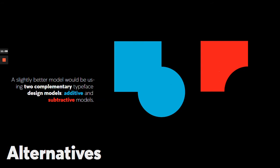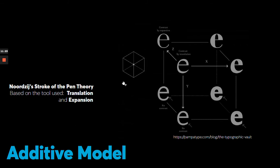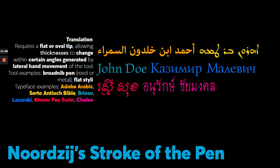Now, we're showing some alternatives — the additive models and the subtractive models. For the additive model, we have Nordenx's stroke of the pen theory. There are two main ways: translation and expansion. The translation tool requires a flatter oval tip, allowing thicknesses to change within certain angles generated by lateral hand movement. Examples include Certo Antioch Bible, Adobe Arabic, Brioso in Latin, Lazursky in Cyrillic, Khmer and Surin for Khmer, and Tuli for Thai.